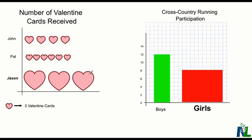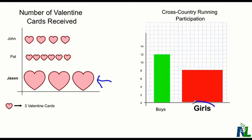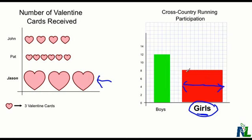Another thing you see often to create a false impression is to use larger symbols, like this one here. If we're following the key, Jason actually received the lesser number of Valentines and Pat received the most — but probably Jason created this to show that he received more than he actually did. Same thing here: 'girls' is bolded and the width of the bar is a lot bigger than the other one, trying to create the impression that more girls participated in cross country than boys. But if we read the grid, we see the actual difference — 12 and 8. So again, trying to create a false impression by bolding labels or changing the size of objects in the graphs.